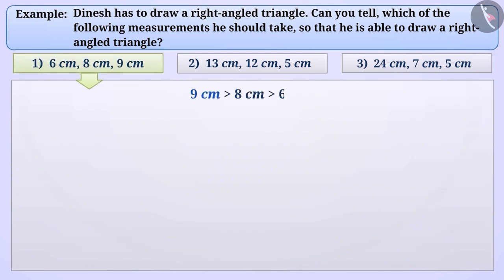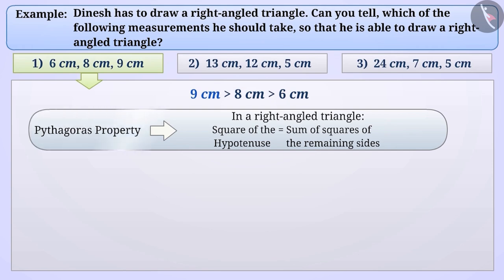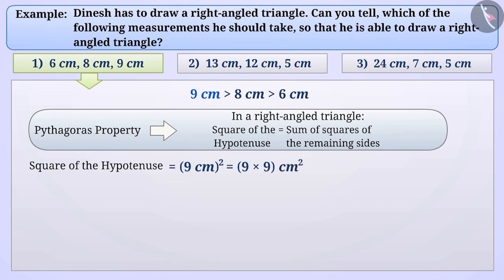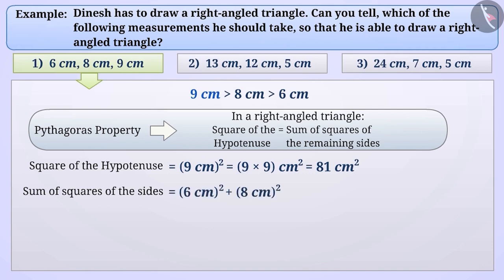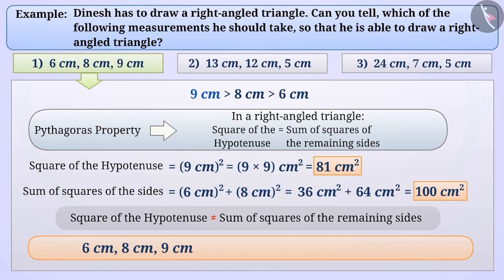In the first statement, 9 cm is the greatest measure, so it can be the measure of the hypotenuse. According to the Pythagoras property, the square of the hypotenuse should equal the sum of the squares of the remaining sides. The square of the hypotenuse = 9² = 81 cm². The sum of the squares of the sides = 6² + 8² = 36 + 64 = 100 cm². Since 81 ≠ 100, a right-angled triangle cannot be formed by the measures 6 cm, 8 cm, and 9 cm.